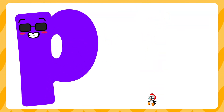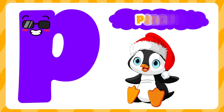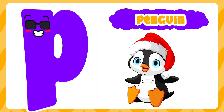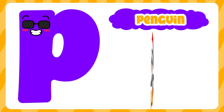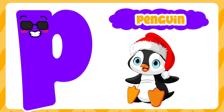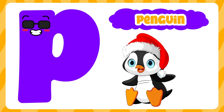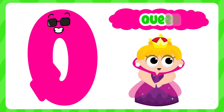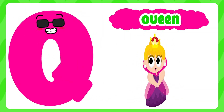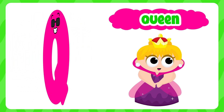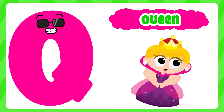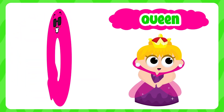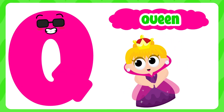P is for penguin. Pu, pu, penguin. P is for penguin. Pu, pu. Q is for queen. Pu, pu, queen. Q is for queen. Pu, pu.